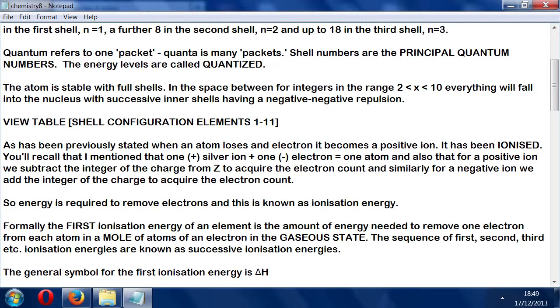When an atom loses an electron it becomes a positive ion. It's been ionized. For a positive ion we subtract the integer of the charge from Z to acquire the electron count. For example, potassium 40-19 with a positive charge: take the proton number 19, subtract 1 for the charge, giving 18 electrons. Similarly, for a negative ion we add the integer of the charge to acquire the electron count.